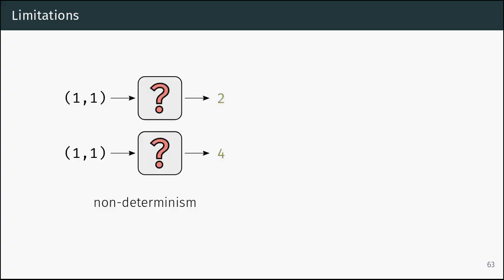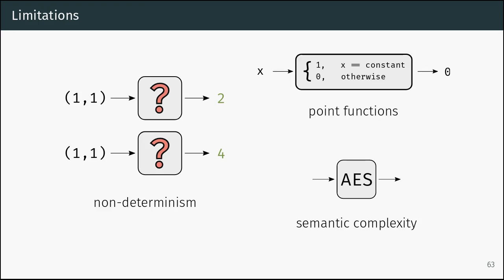The general limitations are: we require that for the same input we have the same output — if we have non-deterministic functions we cannot do anything. Semantic complexity is a ceiling — if the semantics are too complex, then they're too complex. And point functions: consider a function with a large input space that returns zero in most cases and one only when some constant condition is true. With random sampling we'll very likely always trigger the zero case and miss the other case entirely.